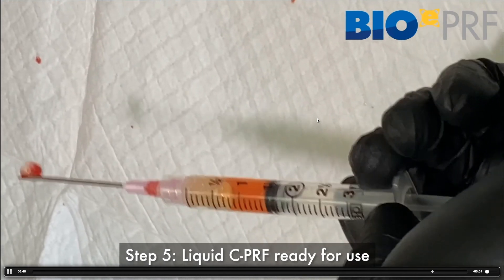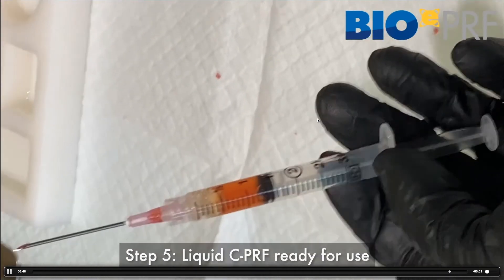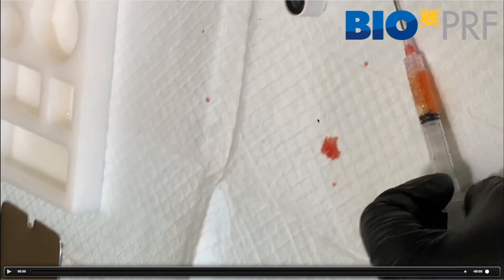So that's how that's done. You can see there, I got about 0.5 to 1 mL, somewhere around 1 mL roughly. That's typically what we're looking for when we draw the C-PRF.